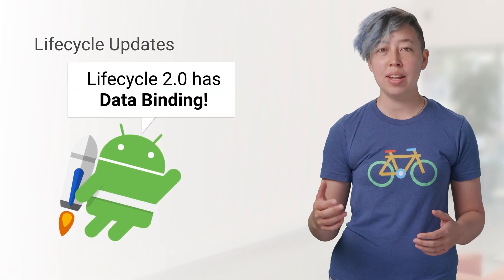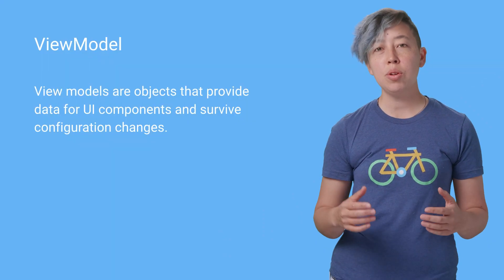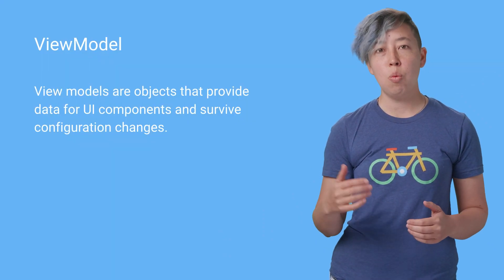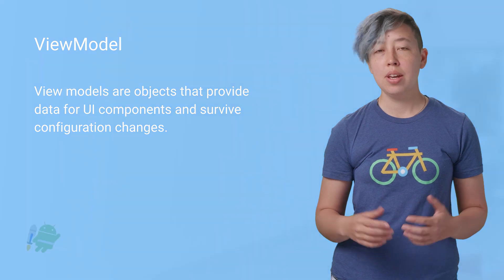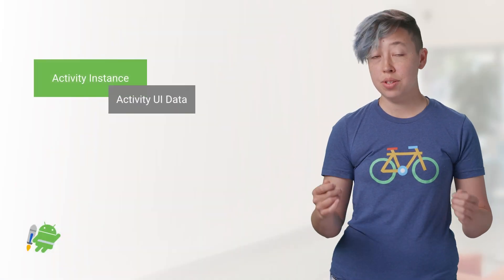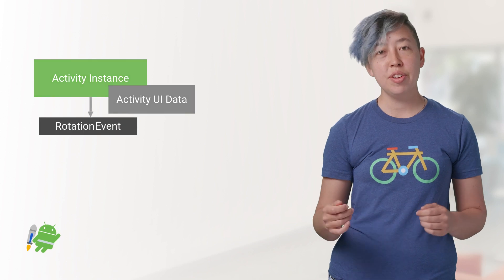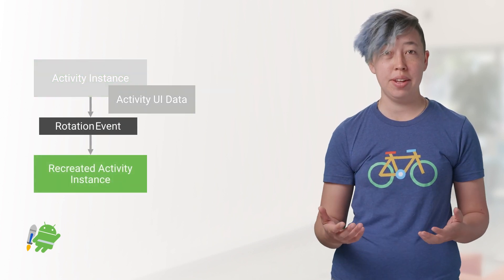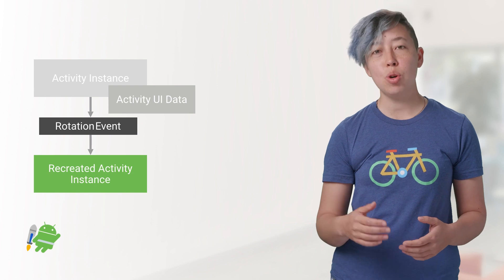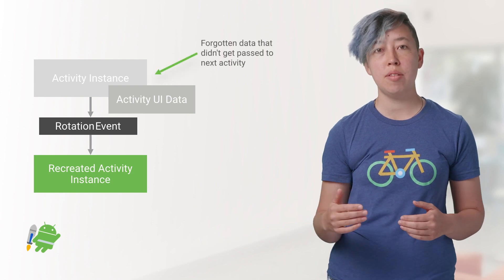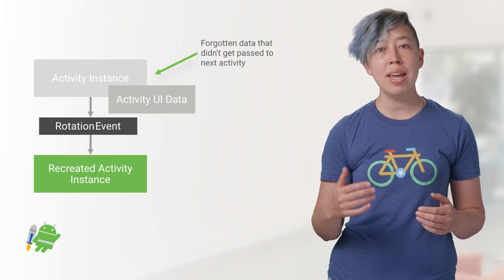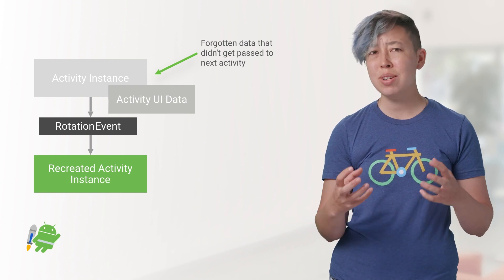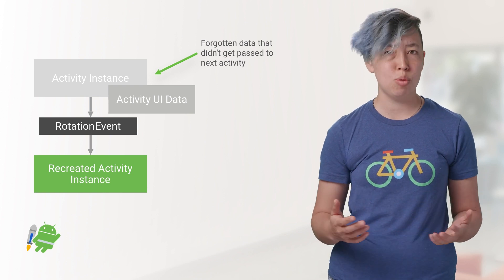This is a tour of the Lifecycle Library's ViewModel class. A ViewModel holds your app's UI data while surviving configuration changes. Rotating your phone is considered a configuration change, and configuration changes cause your whole activity to get torn down and then recreated. If you don't properly save and restore data from the destroyed activity, you may lose that data and end up with weird UI bugs or even crashes.